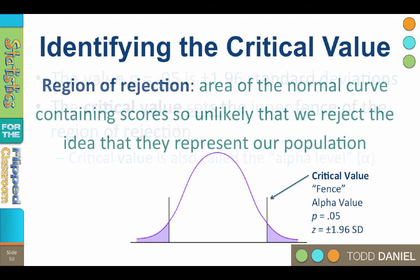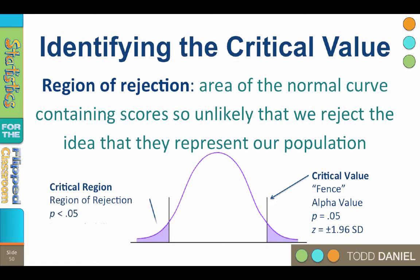The region of rejection, aka the critical region, is the area under the normal curve containing scores that are so unlikely that we reject the idea that they represent our population. These are the small ends of the tails. In this case, they're colored in purple.